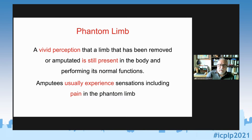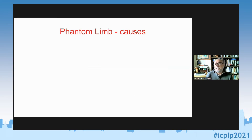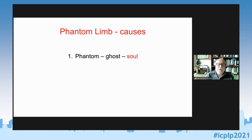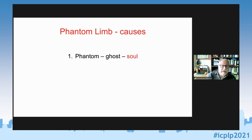Why does this happen? From a historical perspective, the first proposed cause for phantom limb was that it was really a phantom — a ghost, part of the soul. This was a very convenient explanation because it also helped demonstrate the existence of the soul: you have a body and a soul, and if you lose part of your body you cannot lose that part of your soul. That part of the soul is still there because the soul is eternal, immortal, and indestructible — so what you feel is the part of your soul corresponding to the missing bit.